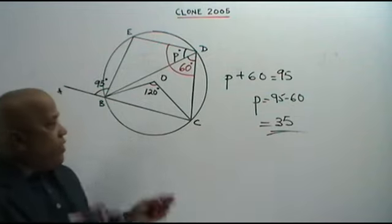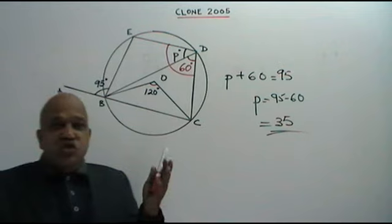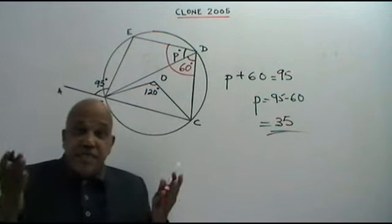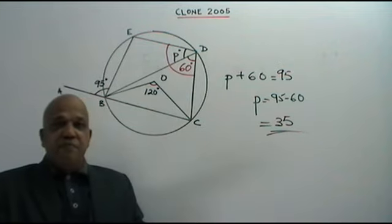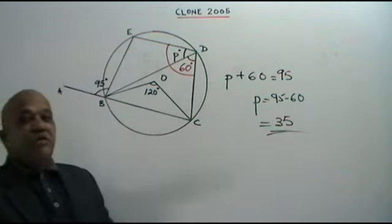The value of P is 35 degrees. If you apply the right theorems, it is so easy.